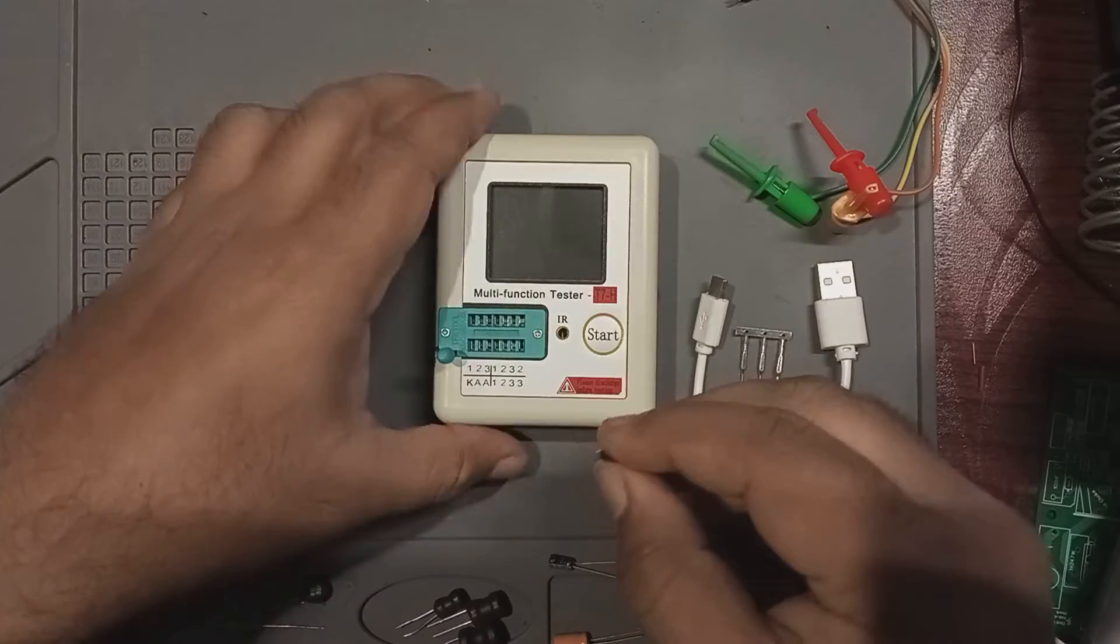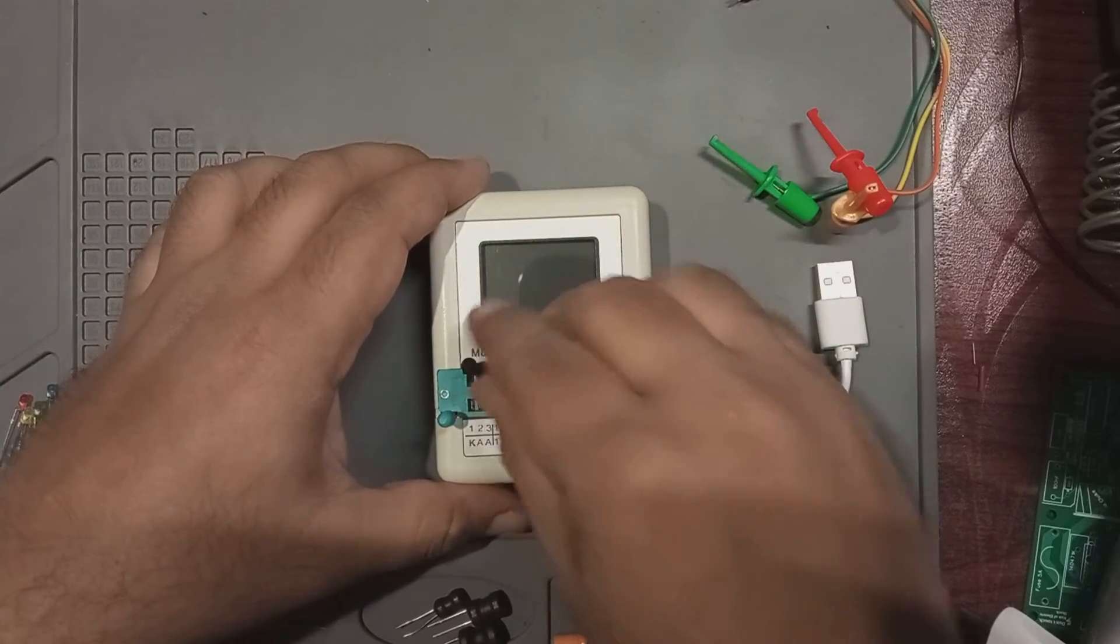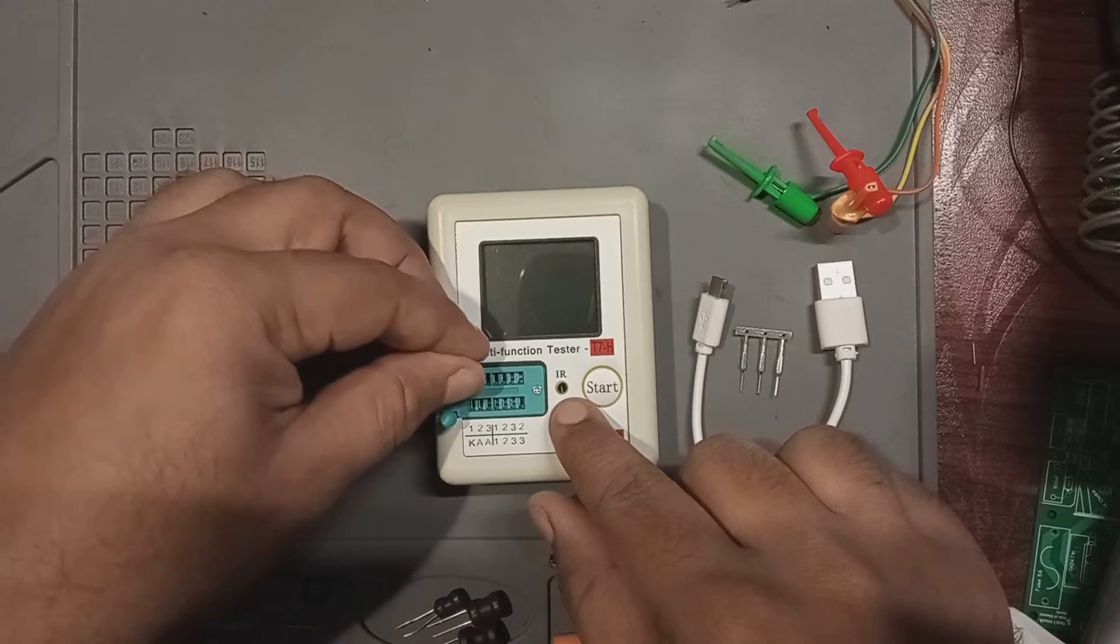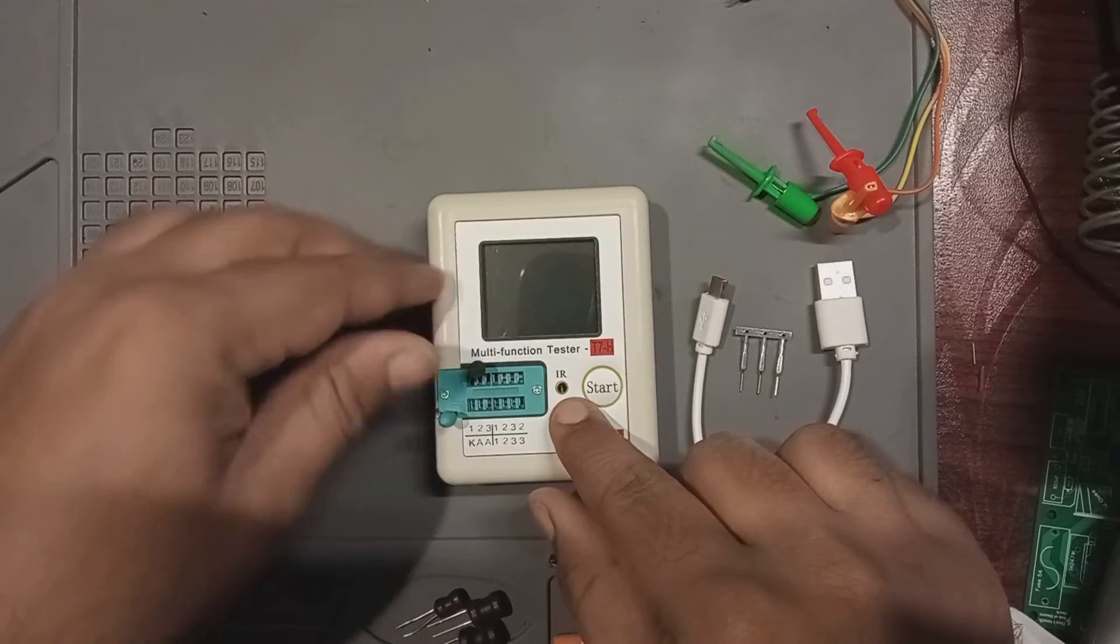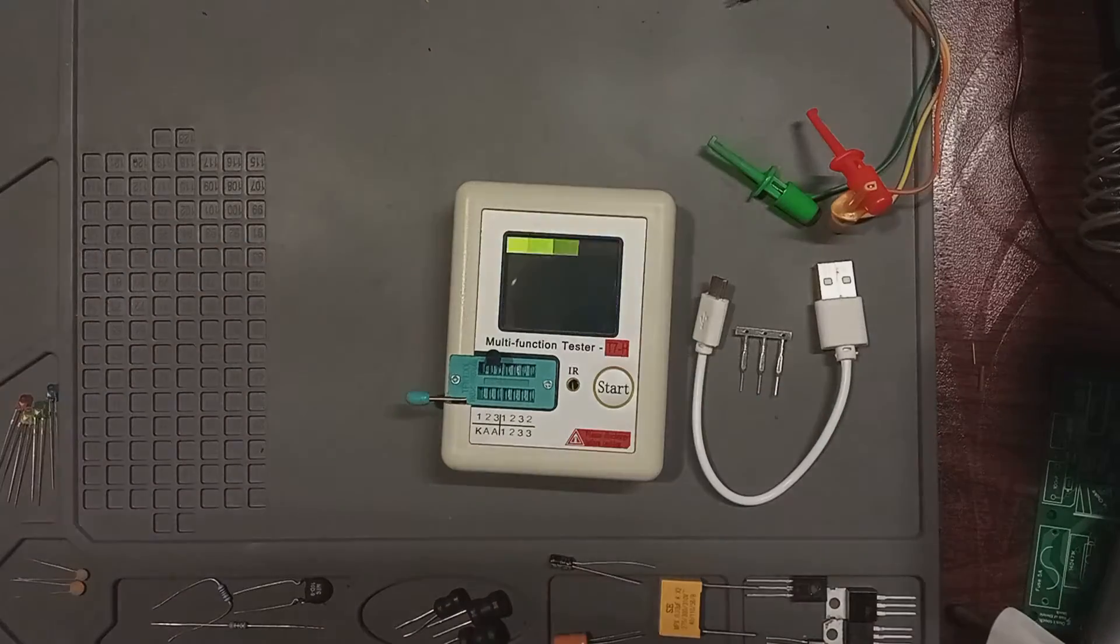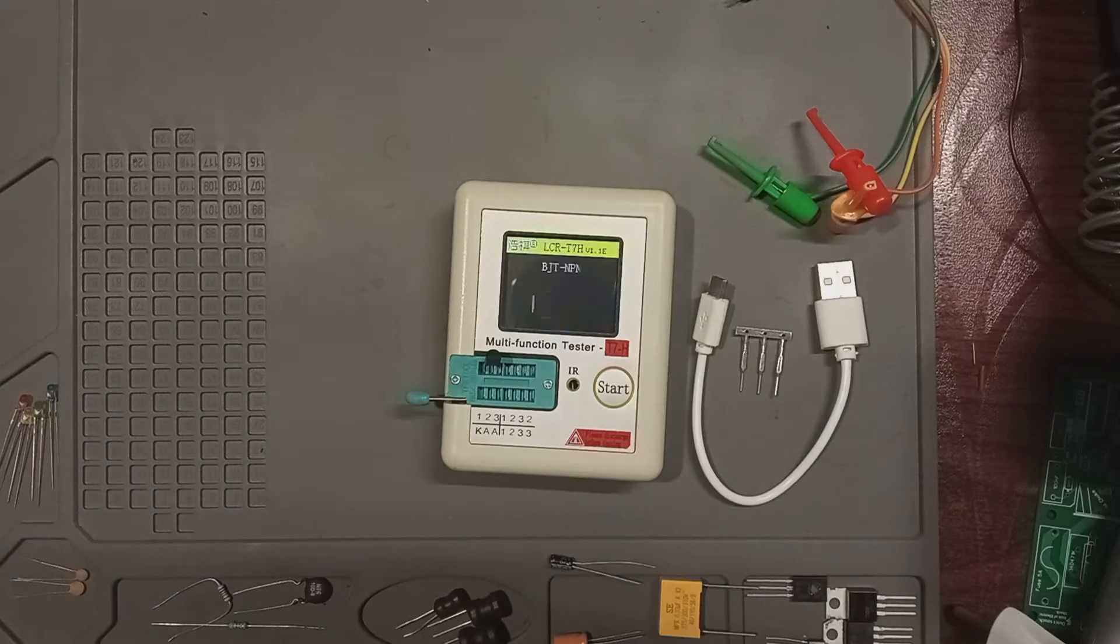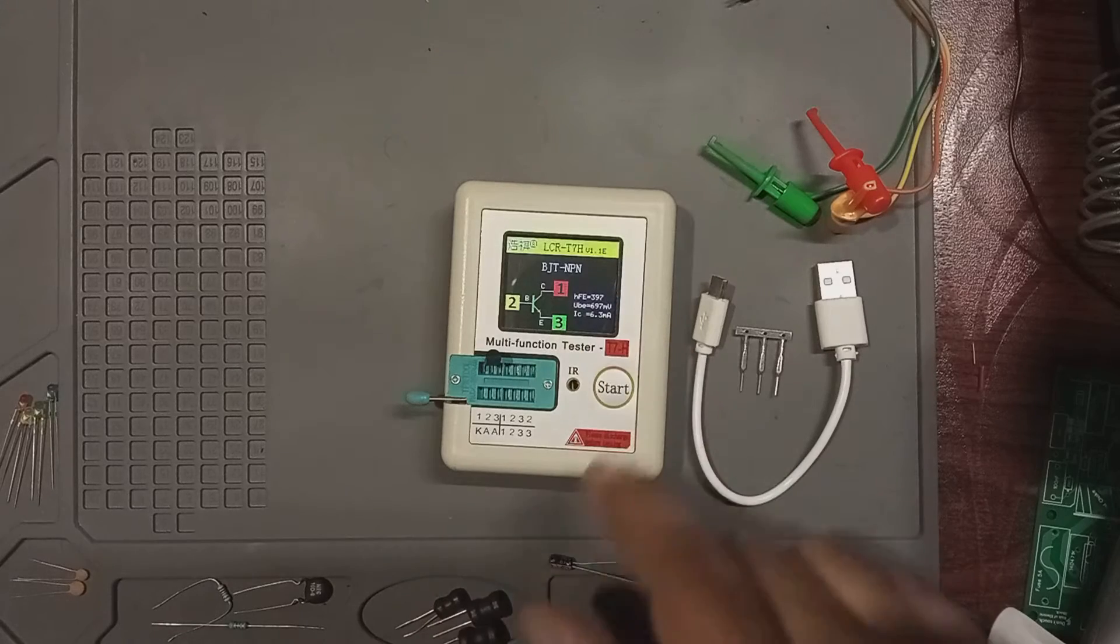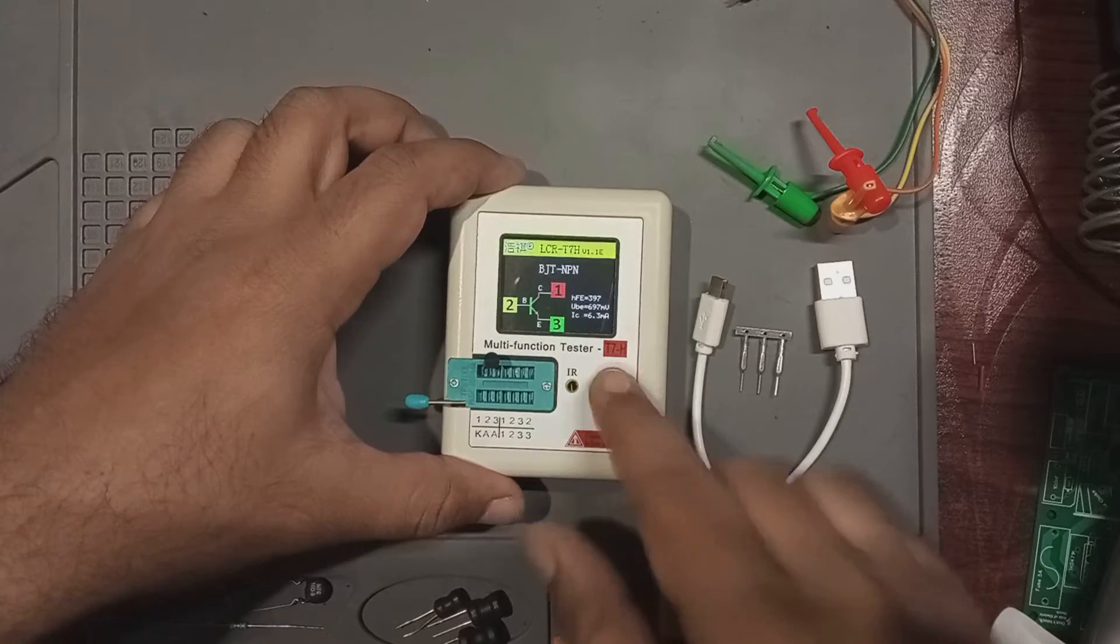By the way, the meter automatically shuts off in about 22 to 25 seconds. In that case, we need to turn on the meter by pressing the start button again. Remember, when connecting the transistor, begin at the far left and use the first three consecutive pins. Once the test is complete, the meter identifies it as a BJT N-pin transistor.